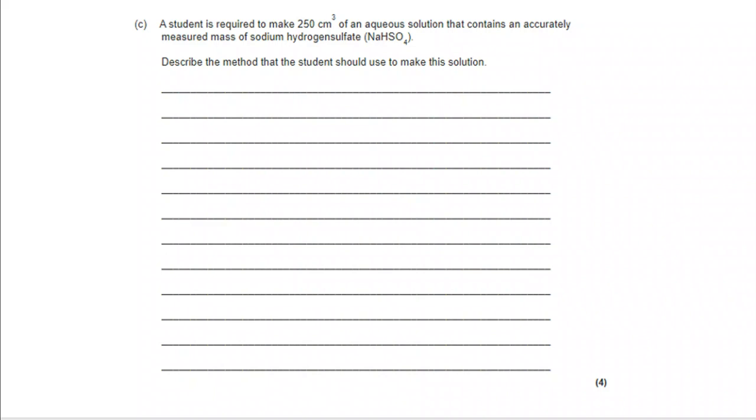So, it's a fairly standard question with a fairly standard answer. To begin with, we're going to weigh a solid that allows an exact mass to be known. Now, you need to specify how you're going to do that. You might weigh by difference, you might weigh with washings, but you decide a method and you stick with that going through.